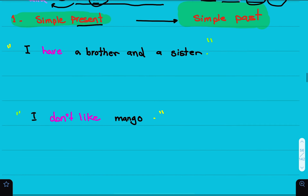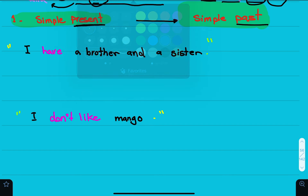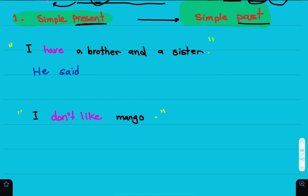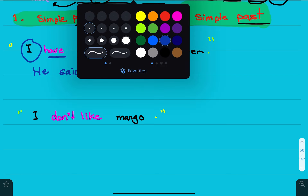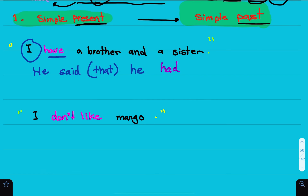Now I'll be looking at each tense and how it changes in reported speech. The simple present — anything in the simple present will change to simple past. For example: 'I have a brother and a sister.' He or she — depending on the speaker — said that he had a brother and a sister. Note that 'that' is optional; you can write it or leave it. 'I' changes to 'he', and 'have' (present) becomes 'had' (past).